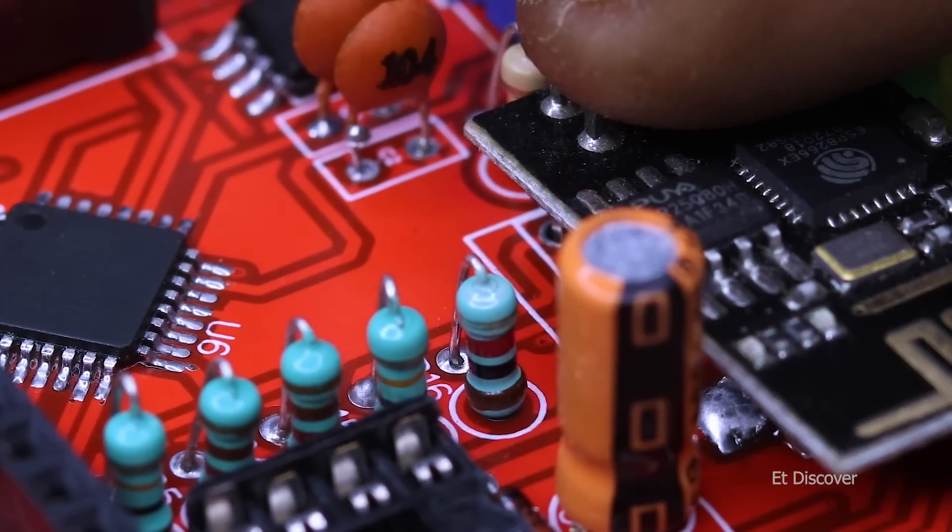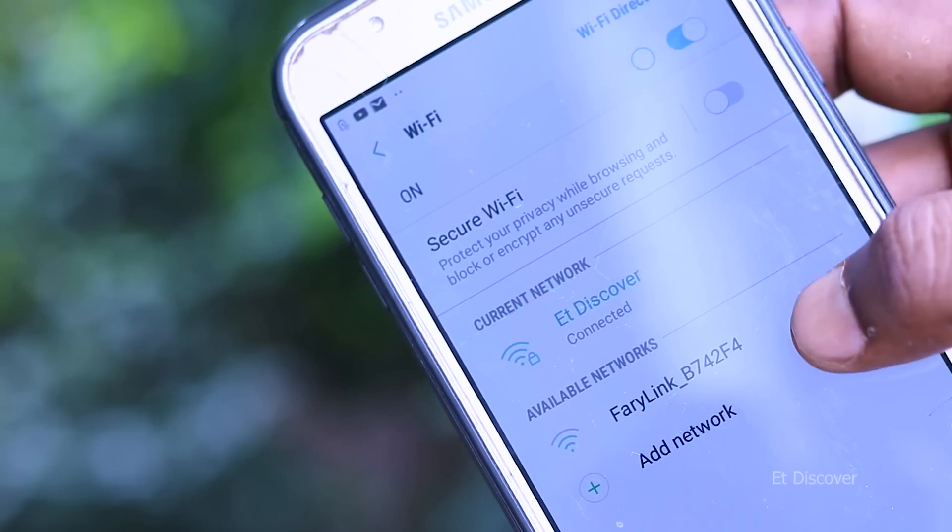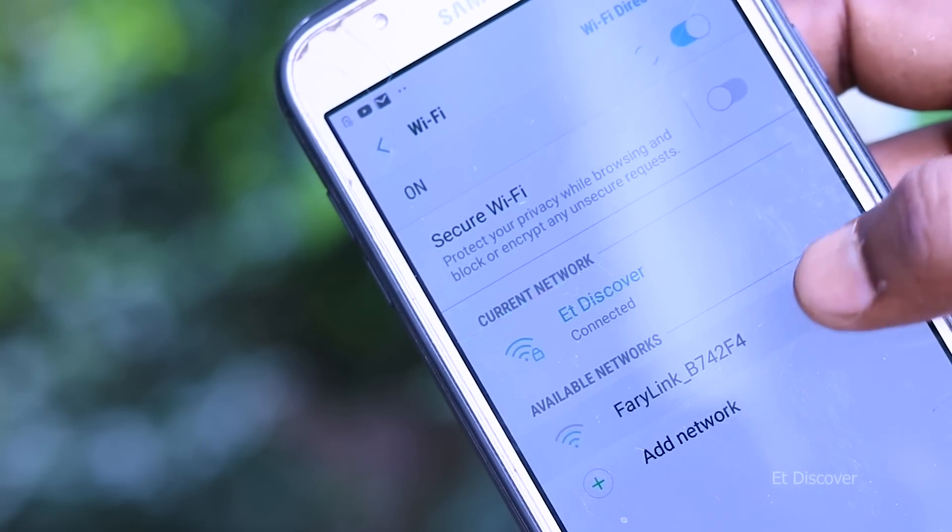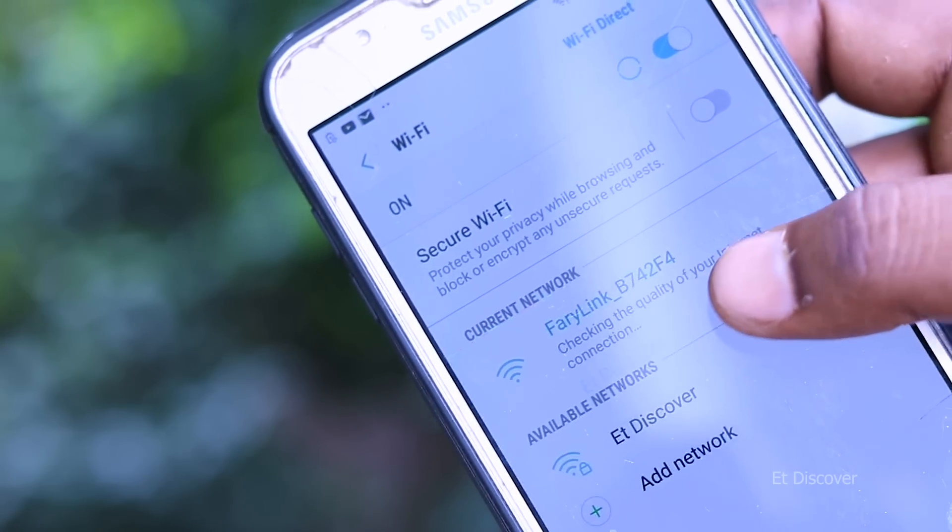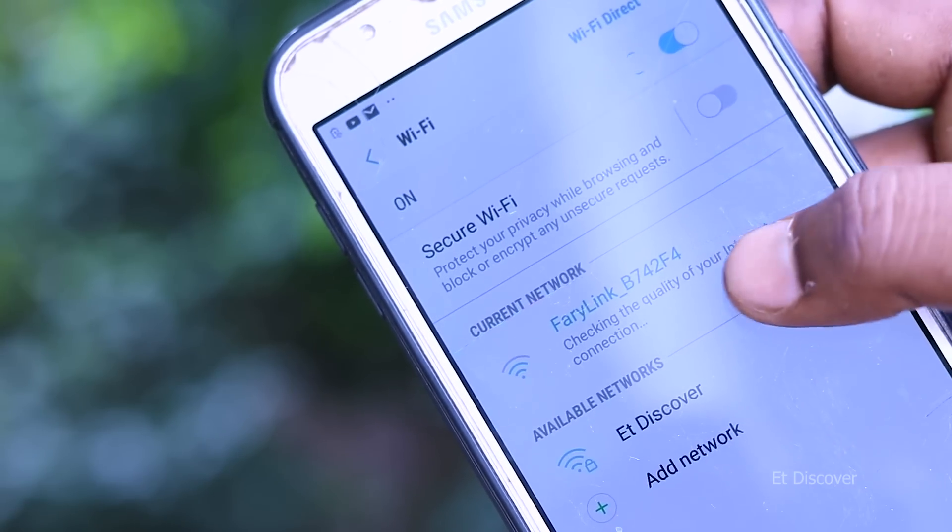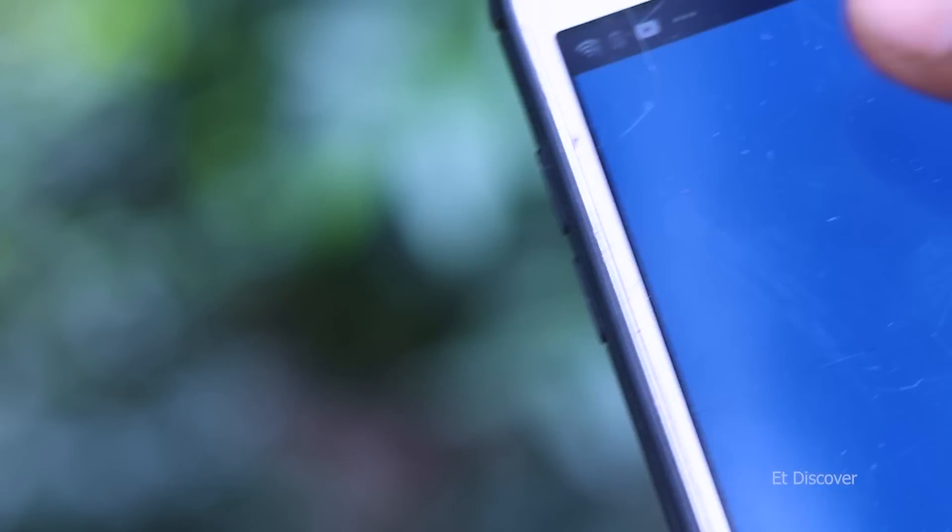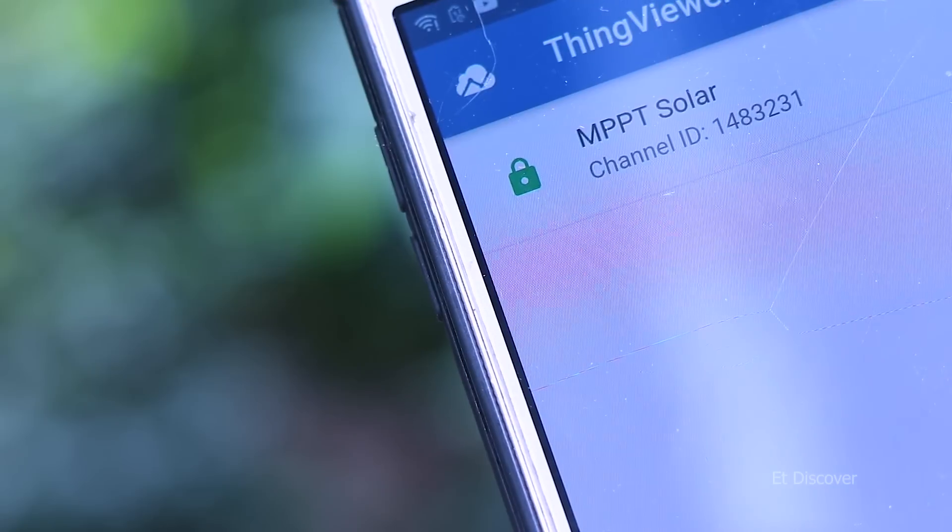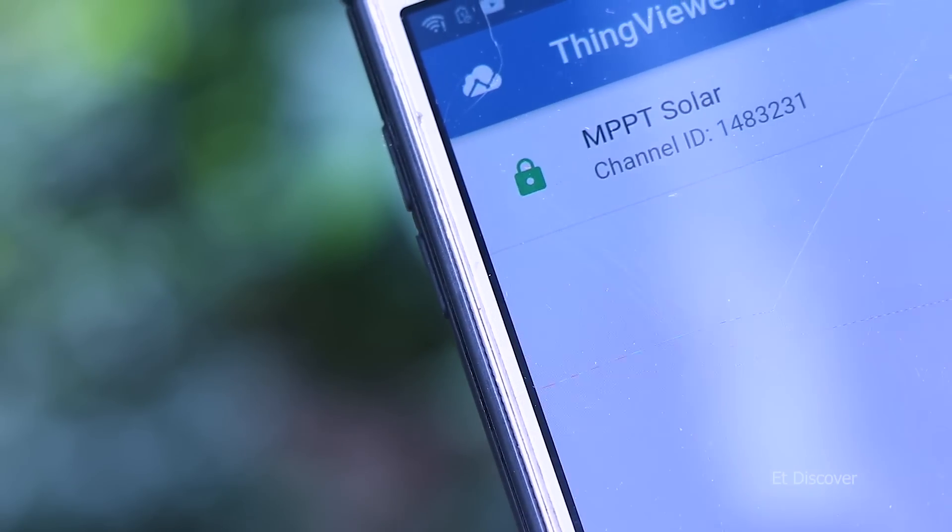One thing is left, that is this ESP8266 WiFi system. See in my phone, the WiFi signal in my MPPT solar charging controller. Just you need to connect this WiFi signal and open your browser or application and sign up for it and provide your API ID and you can see your daily data. How much energy is being generated.